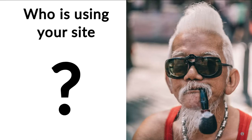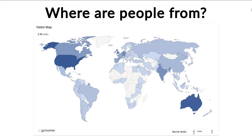One of the questions that Matomo can answer is where are the people from that use our site? You can find that out based on information from tables that you can export, but you can also have a visual overview by using a map. In this case here you see the world map, but you can definitely also drill further down into the countries themselves and then go deeper until you come to the cities.